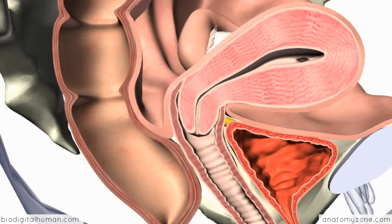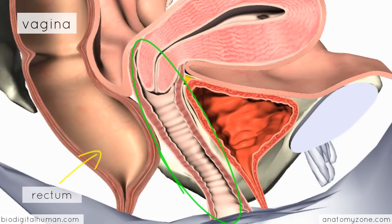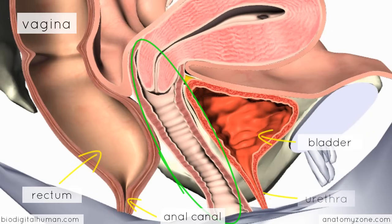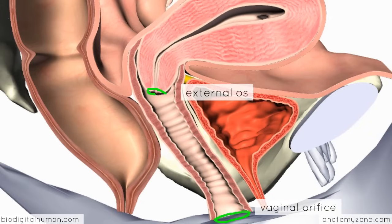The lower part of the female reproductive tract is the vagina, which is a fibromuscular tube. It lies anterior to the rectum and the anal canal, and behind the bladder. The vagina runs between the external vaginal orifice up to the external os of the cervix. This internal end of the vagina is known as the vaginal vault.